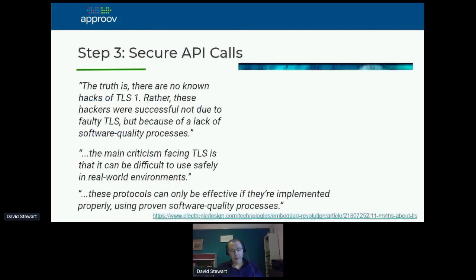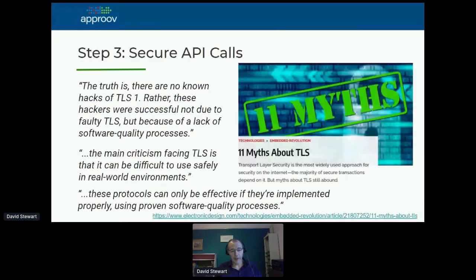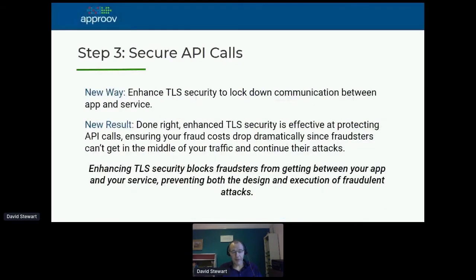Step three is to secure your API calls. TLS is the general way of doing it, and there isn't anything inherently wrong with TLS, but it needs to be implemented correctly — using all of its features including certificate pinning. There are many examples of TLS not being implemented correctly or completely. We've seen examples of people not implementing certificate pinning because they're scared about what will happen if they need to rotate their certificate, so it requires you to make sure it's properly implemented.